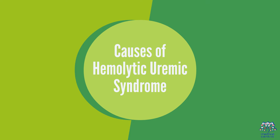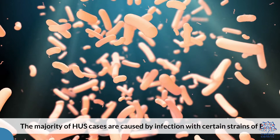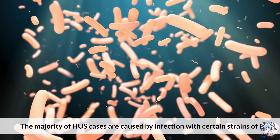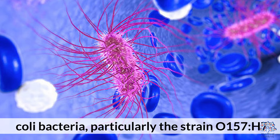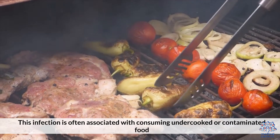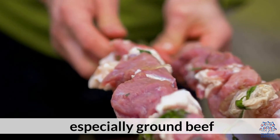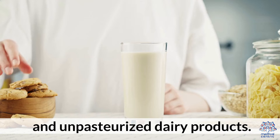Causes of Hemolytic Uremic Syndrome. 1. Bacterial Infections: The majority of HUS cases are caused by infection with certain strains of E. coli bacteria, particularly the strain O157:H7. This infection is often associated with consuming undercooked or contaminated food, especially ground beef and unpasteurized dairy products.